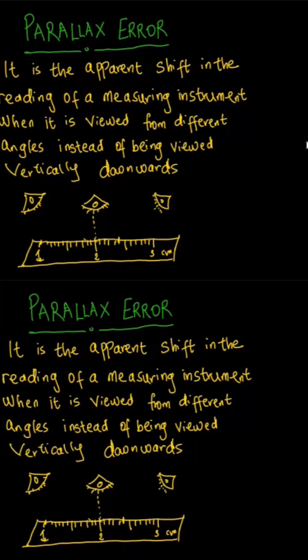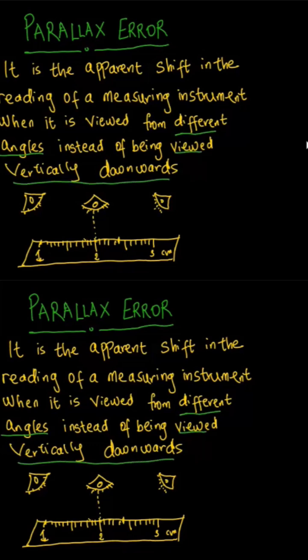So what is this error? This error happens when there is an apparent shift in the reading of a measuring instrument when it is viewed from a different angle, rather than being viewed vertically downward.